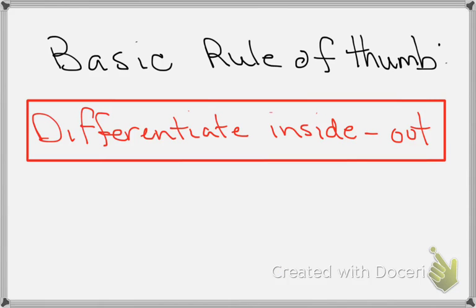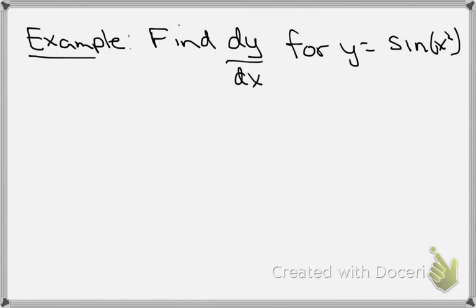Our basic rule of thumb for using the chain rule is to differentiate inside out. So let's look at an example.